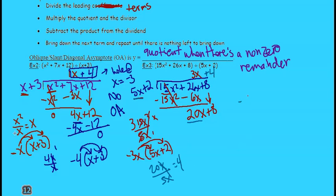Multiply this by negative 4, the divisor. So we have negative 20x minus 8. We also get a remainder of 0.